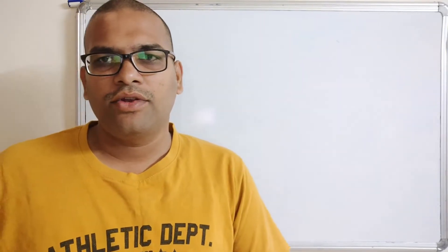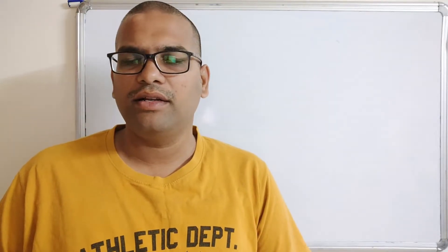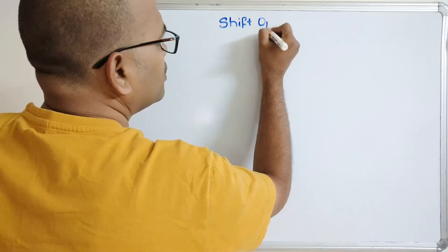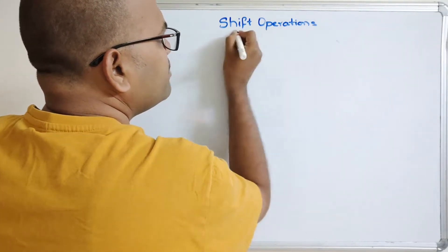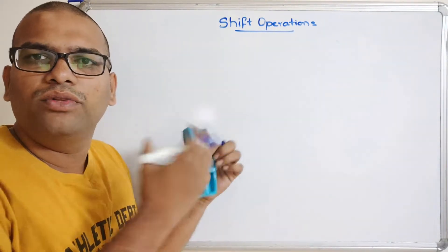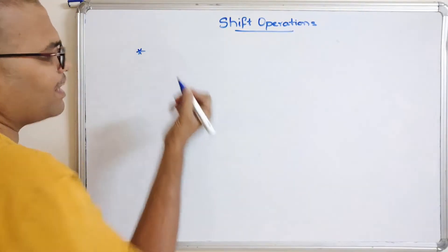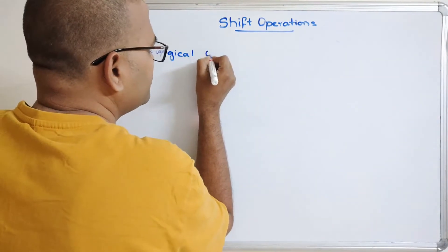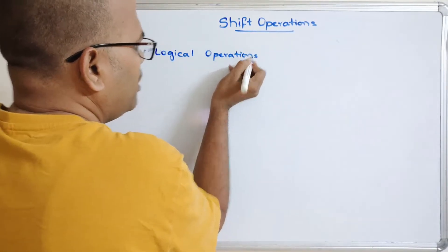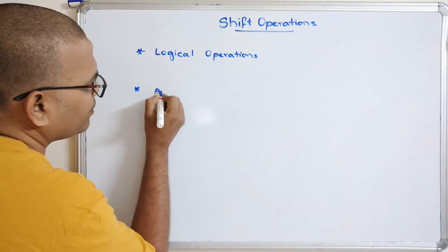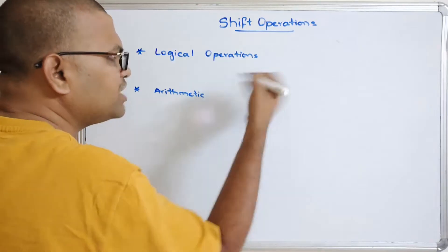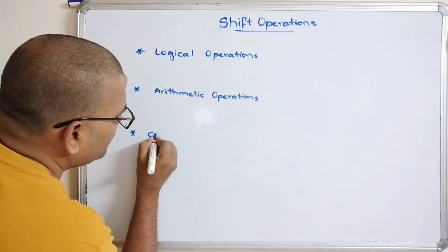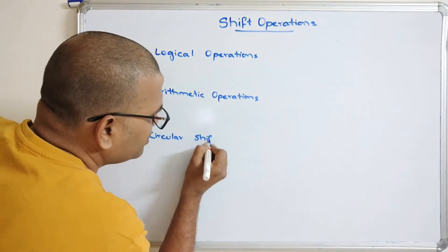Hello friends, welcome back to our channel. In today's session we'll discuss one more concept in computer organization: shift operations. There are mainly three types of shift operations: logical shift operations, arithmetic operations, and circular shift operations.